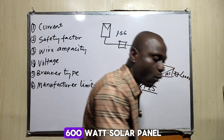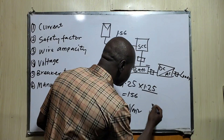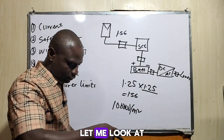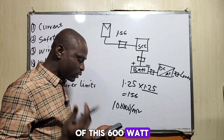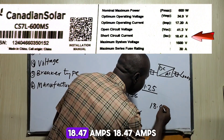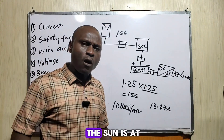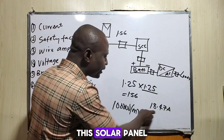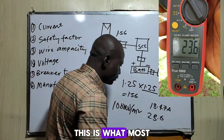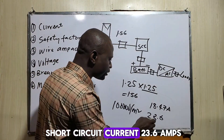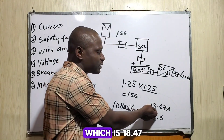For example, I have a 600-watt solar panel. The short-circuit current of this panel is 18.47 amps. But most times when the sun is at its peak, if you check the short-circuit current it reads 23.6 amps — which has exceeded the rated value of the solar panel, which is 18.47 amps.